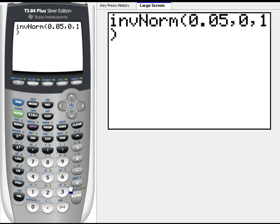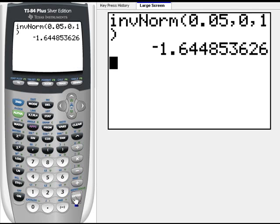For the standard normal curve, both the 0 and the 1 can be omitted. And we find that the Z sub C, the critical value that's on the left side of the mean 0 would be negative 1.645, rounded to three decimal places.